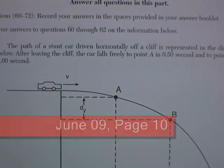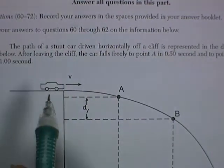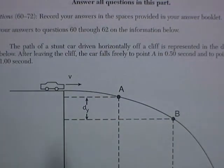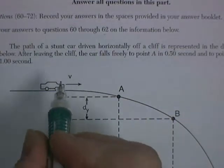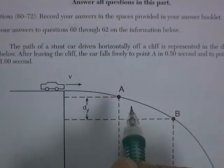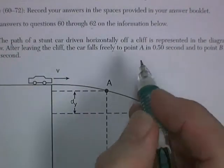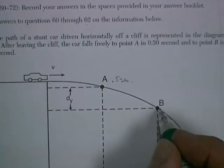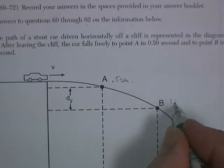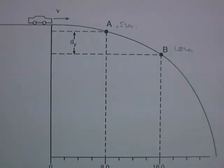This is the June 2009 exam. We're on page 10, and this is the beginning of Part C. These are the hard questions. Questions 60 and 61 and 62 refer to this picture. It's a stunt car driven horizontally off a cliff, and it represents the diagram. After leaving the cliff, the car falls freely to point A in 0.5 seconds and reaches point B in one second. So between A and B is a half second.